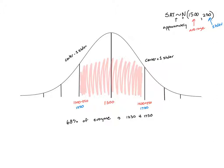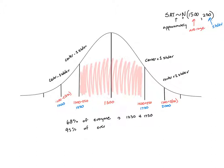Let's go one more standard deviation on either side, moving out to the center plus two standard deviations and the center minus two standard deviations. To get those values, I take my average of 1500 and add 2 times 250, and on the other side take 1500 minus 2 times 250. On the upper end I get 2000, and on the lower end I get 1000. So 95% of everyone on the SAT will score between 1000 and 2000.